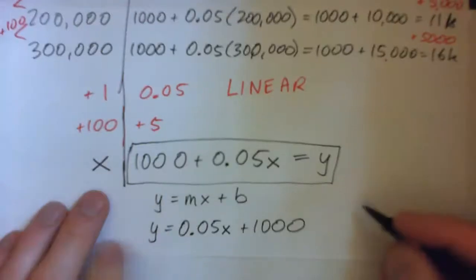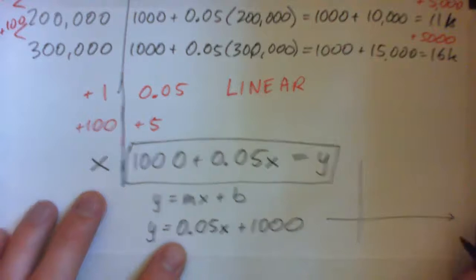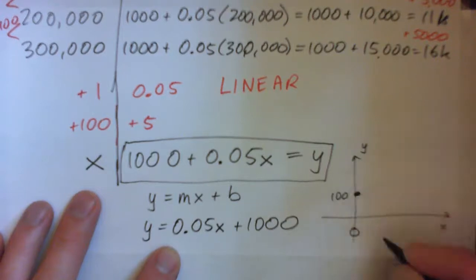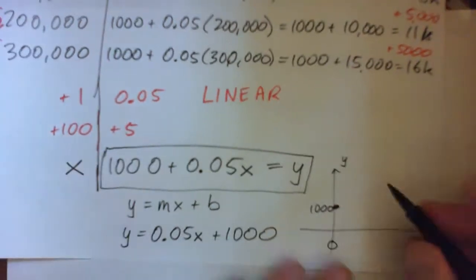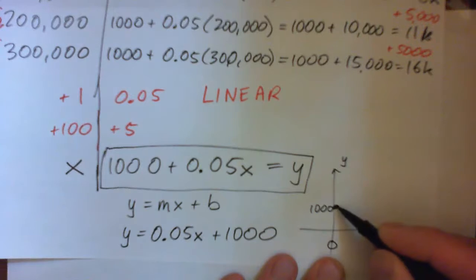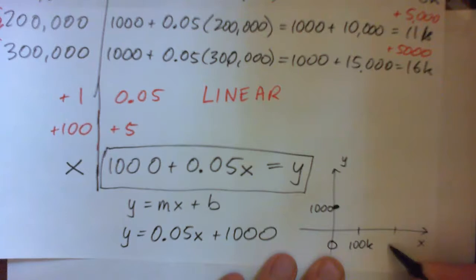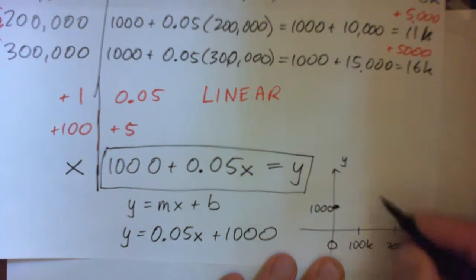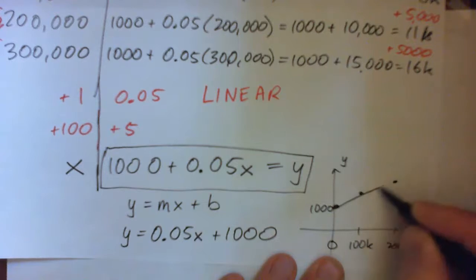In other words, if you're to graph that, you'll find that it begins with, for zero sales, he starts at $1,000. And he goes up, the increases, as the sales increase, like $100,000, $200,000, and so on, his salary increases by $0.05 on the dollar, basically. And that would be a straight line.